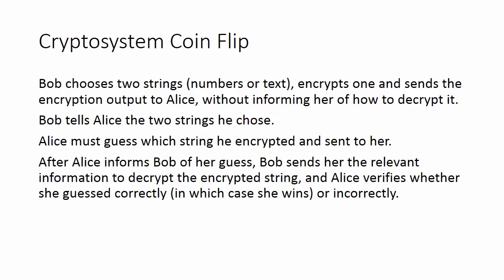This is an alternate coin flipping protocol based on the method used to modify Blum's protocol so that Bob cannot lie and say he lost intentionally. The protocol is as follows. Bob chooses two strings, numbers or text, encrypts one, and sends the encryption output to Alice without informing her of how to decrypt it.